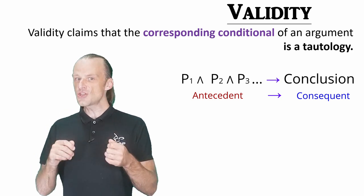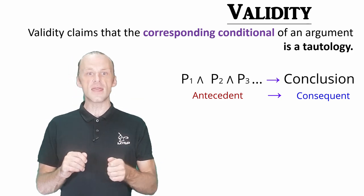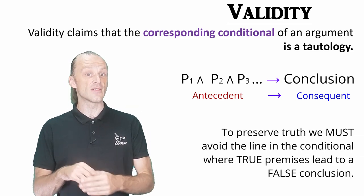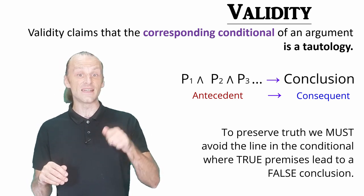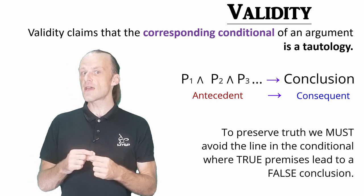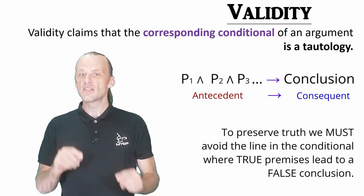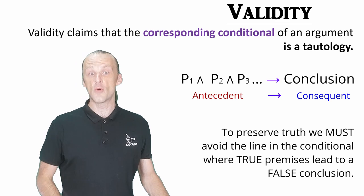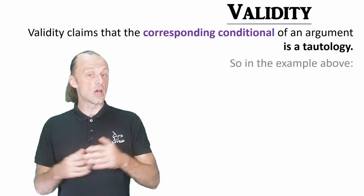Remember that in the conditional truth table, the only line we can be absolutely clear about is that if a true antecedent leads to a false consequent, then that conditional is false. This is how truth is not preserved, so this is the case we must avoid. Let's look at our example from above.